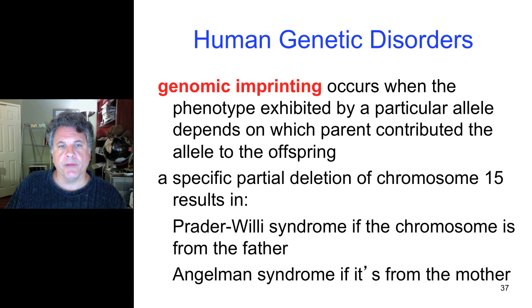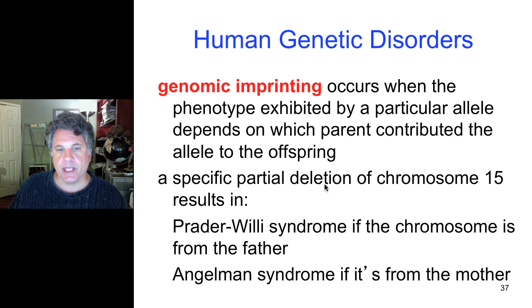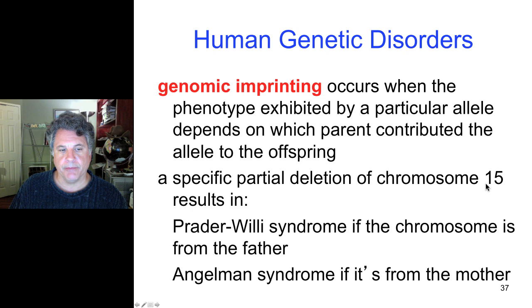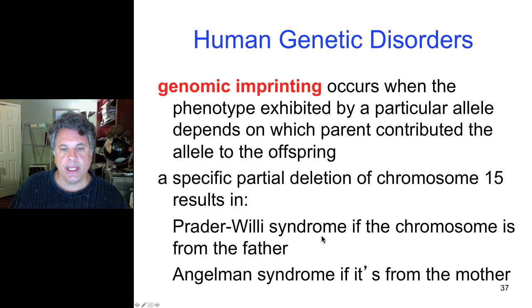Let's look at a couple of these disorders by examining the effect of genomic imprinting revealed by a partial deletion of chromosome 15. A chromosomal deletion means a defective chromosome is missing certain genes — those genes have been deleted and are gone. If a deletion chromosome missing certain genes of chromosome 15 is contributed by the father to offspring, we end up with something called Prader-Willi syndrome. This disorder exists because the female has inactivated genes in the chromosome she contributed, and since the male passes on chromosome 15 missing that gene, we end up with a mutant phenotype including, among other effects, mental retardation.